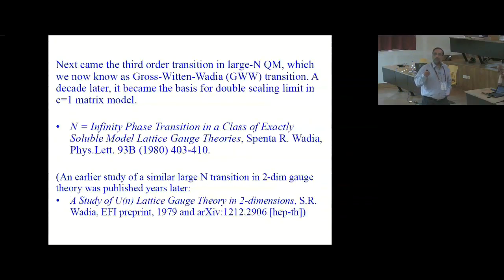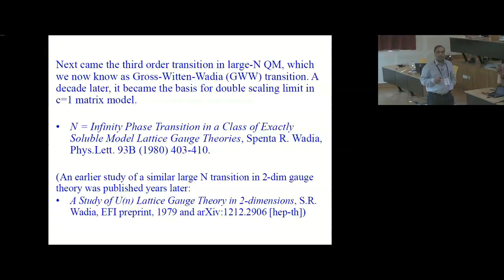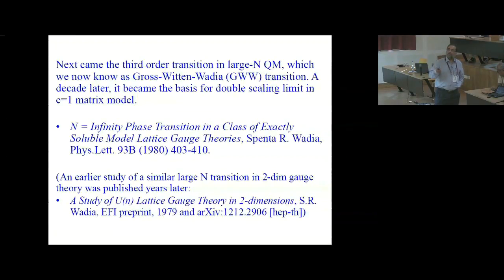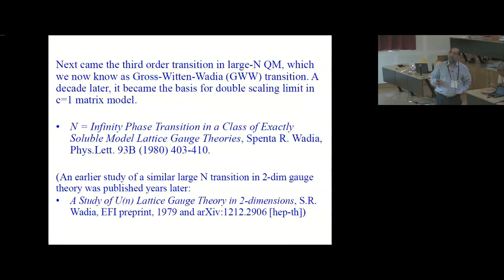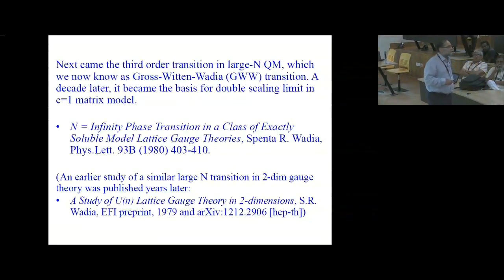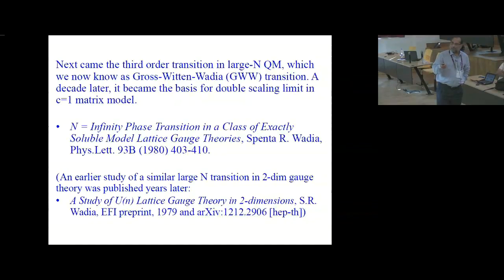The next two important papers were on large-N quantum mechanics and large-N two-dimensional gauge theory. This is the paper we heard about in the morning — the Gross-Shatashvili-Wadia transition paper, which has become a basis for the double scaling limit in the c=1 matrix model. This paper contains the third-order phase transition that we now know as the GWW transition. There is a little story here which you can read in our conversations with Spenta available on the SpentaFest website, having to do with an earlier work he had done.